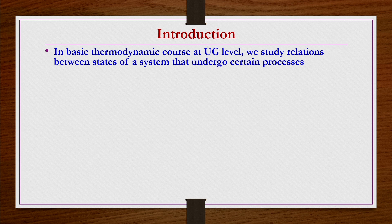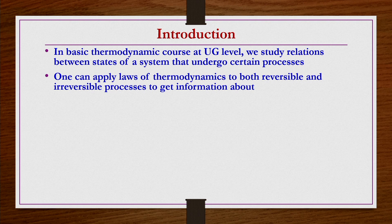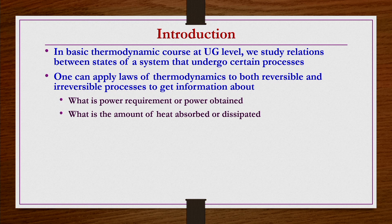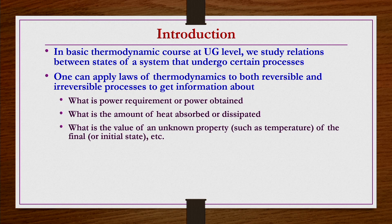In a basic UG level thermodynamics course, we study relations between states of a system that undergo certain kind of processes. We apply the principles of thermodynamics to both reversible and irreversible processes to get information such as power requirement or power obtained, amount of heat absorbed or dissipated, and unknown properties such as temperature of the final or initial state.